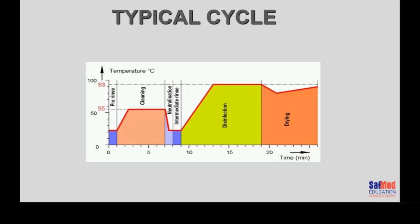After the wash phase, depending on the setup, if you're using alkaline-based detergents you may have to neutralize them. Then the instruments are rinsed. Then there's a disinfection phase — in that phase, referring to the temperature on this particular chart, they're referring to 93 degrees. That's called the AO relationship — the temperature at which disinfection takes place — and that's a variable. It can be at a higher temperature for a shorter period of time, or a slightly lower temperature for a longer period of time. The very last phase is the drying cycle.